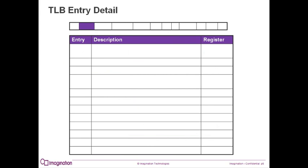Now for a more detailed view of the actual TLB. You cannot actually read or write whole TLB entries. There are coprocessor zero registers designed to hold the data to be read or written to the TLB. These coprocessor zero registers will be covered in more detail later in this section. This table shows which register contains which piece of data that will go into making up a TLB entry.